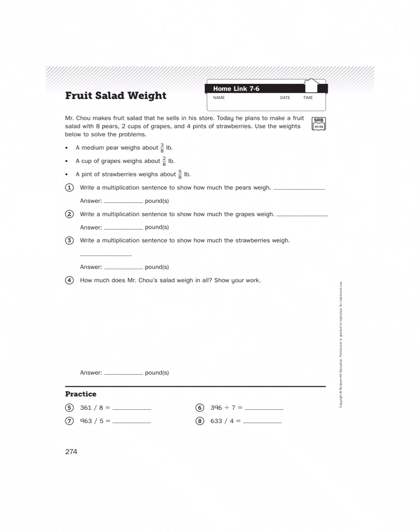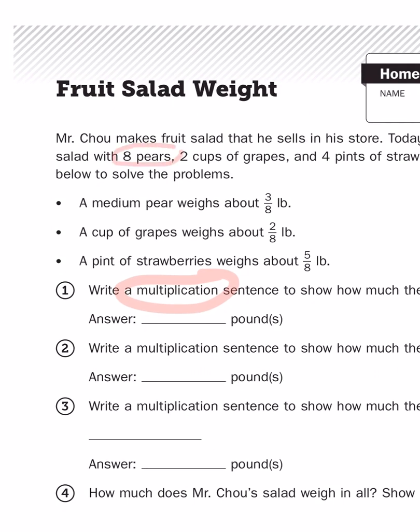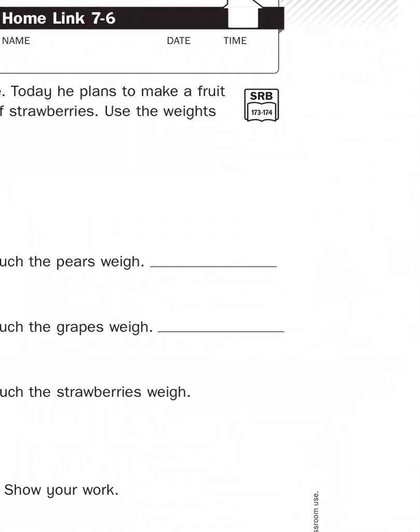All right, so the first problem is write a multiplication sentence to show how much the pears weigh. Now, if I was using the ruckus strategy to break down this problem, I've already got the A in ruckus because it tells me we're going to be multiplying. So what's my question? Well, for number one, I want to know how much the pears weigh if I'm going to be using eight pears, and each medium pear weighs about three-eighths of a pound.